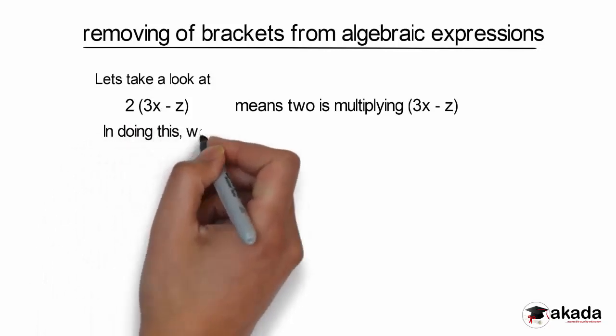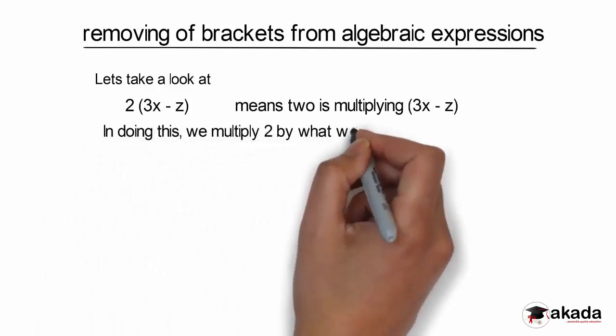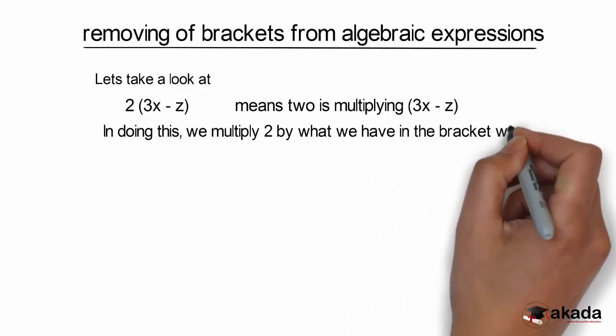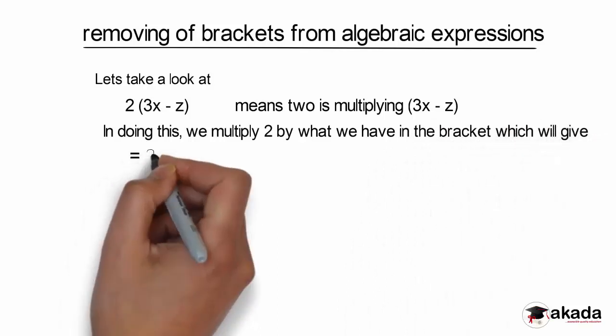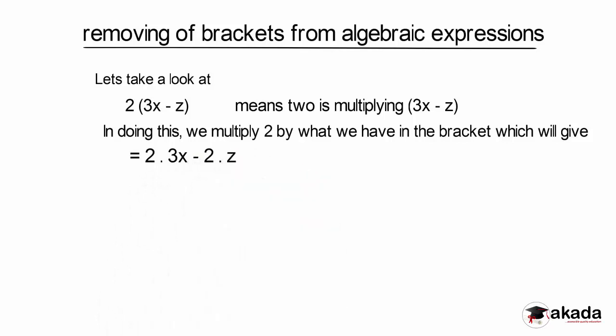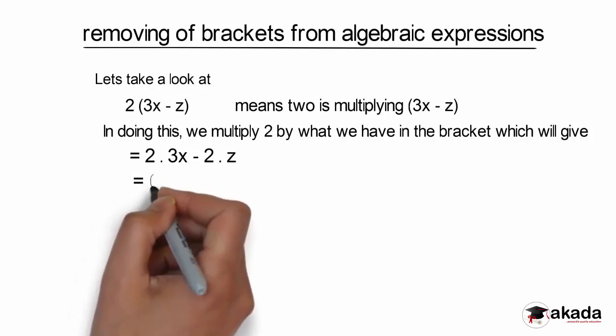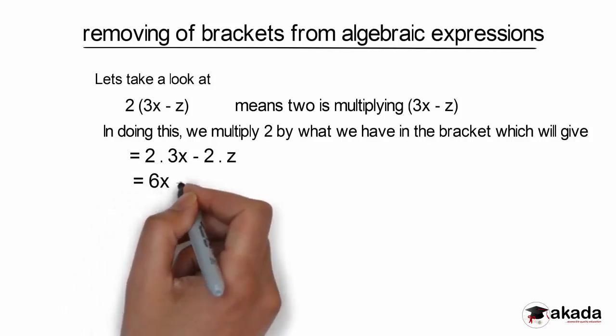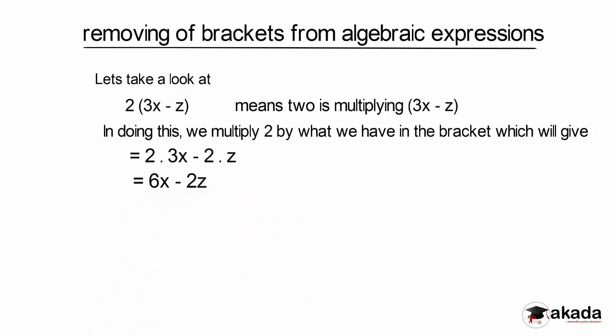In doing this, we multiply 2 by what we have in the bracket, which gives us 2 dot 3x. My dot here is representing the multiplication sign. So I have 2 multiplied by 3x minus 2 multiplied by z. This gives me 6x minus 2z. So my answer is 6x minus 2z.